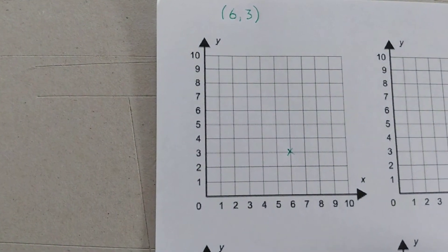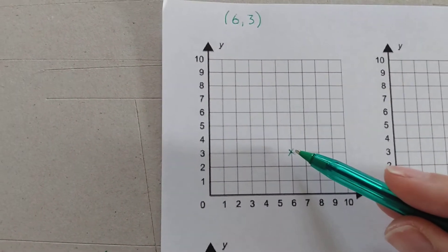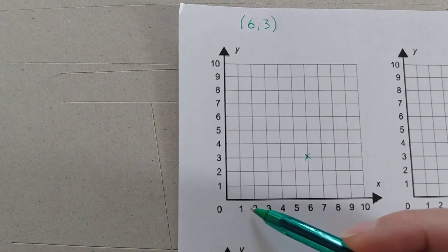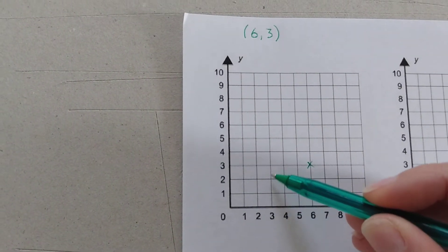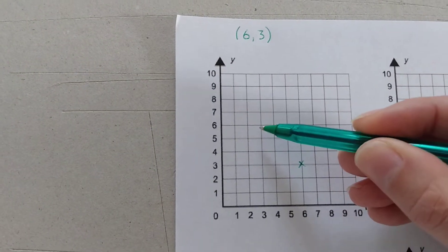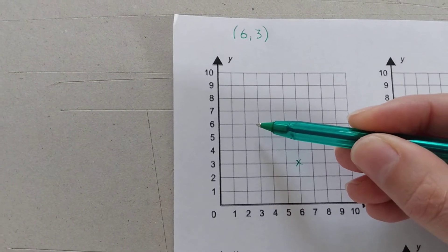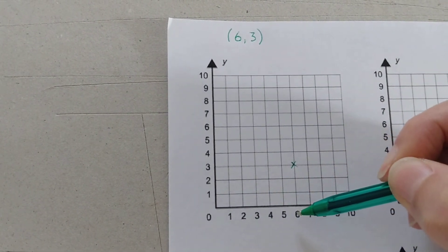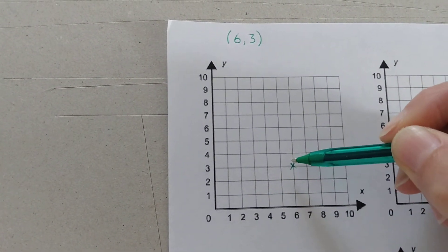Now that is not 3,6. If it was 3,6 it would be along 3 up 6. It would be up there. That's a very different place on our grid, isn't it? So you've got to remember to read the x-coordinate first followed by the y-coordinate.